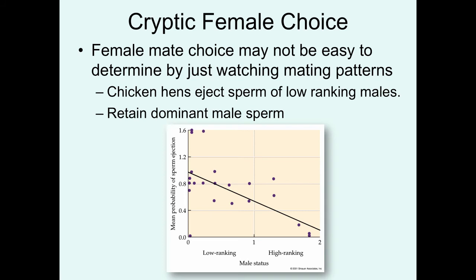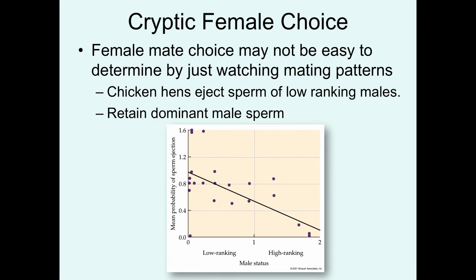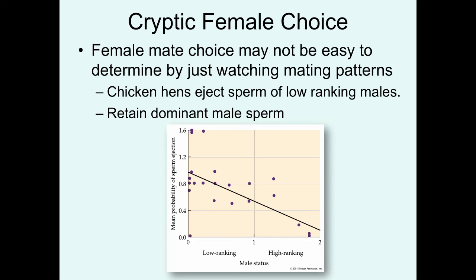Sometimes it can be difficult to determine female choice patterns. Females may mate with multiple males and actually have a stronger preference for one or the other, in which case she may selectively use his sperm to fertilize her eggs. We call this cryptic female choice. This is demonstrated with data from chickens in which hens eject sperm of low-ranking males but retain the sperm from dominant males. If the female retains sperm from multiple males and selects only some of that sperm, the only way to establish male preferences is through genetic analysis — so this can be a very difficult process.